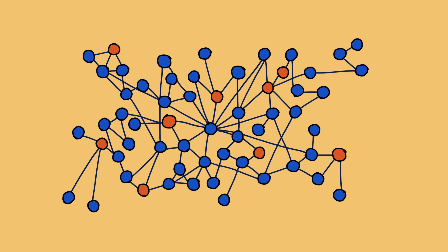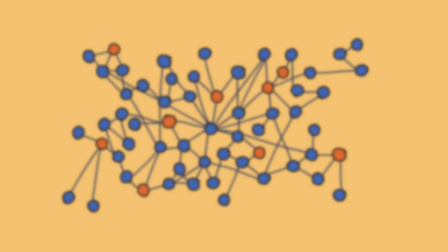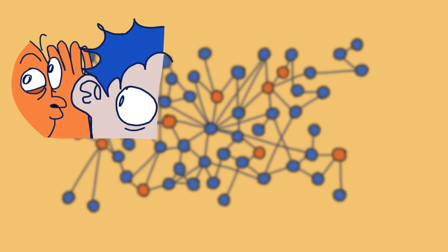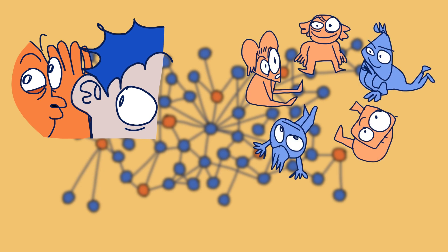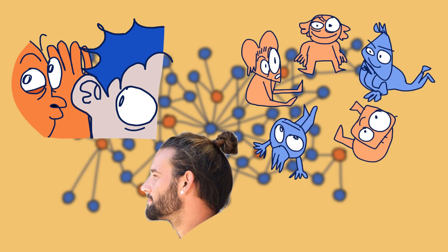By studying the structure of social networks, we can gain insight into any socially contagious phenomenon — this could be how a piece of gossip spreads, how friendship circles work, or how fast a fashion trend takes off. Viruses are transmitted by person-to-person contact, which makes social networks perfect for studying and predicting their behavior.